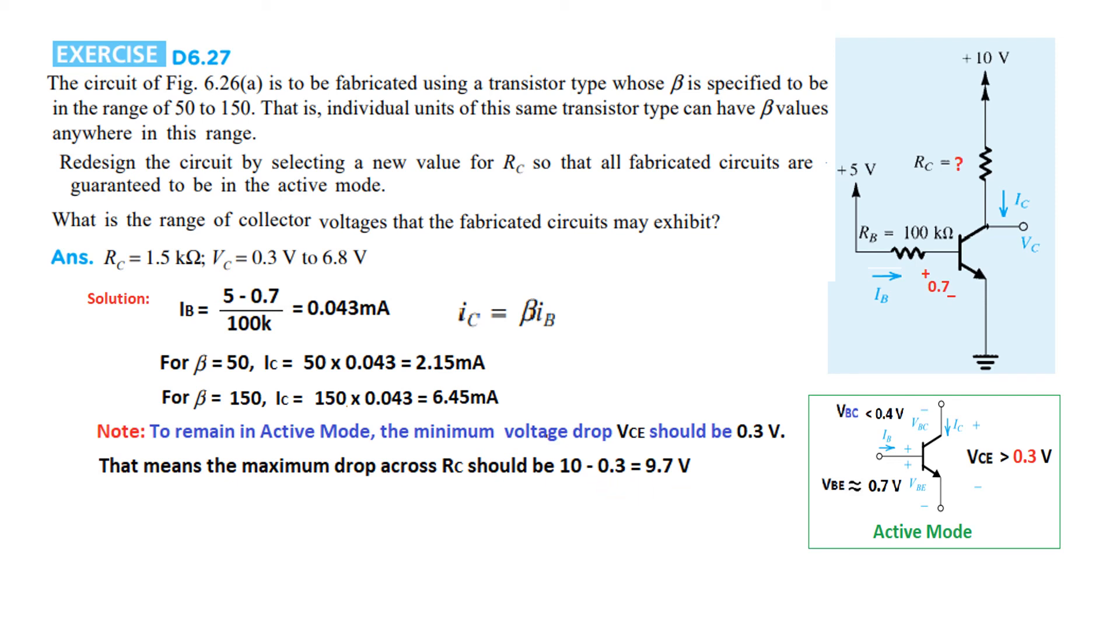That means the maximum drop across RC should be 10V - 0.3V = 9.7 volts. This voltage drop will occur when the current IC is maximum, that is IC = 6.45mA. Therefore, RC = VRC / IC(max) = 9.7V / 6.45mA = 1.5kΩ. So that's the first point.